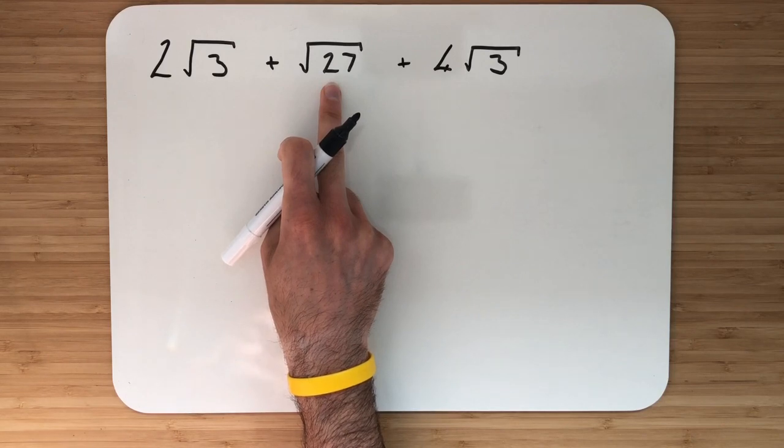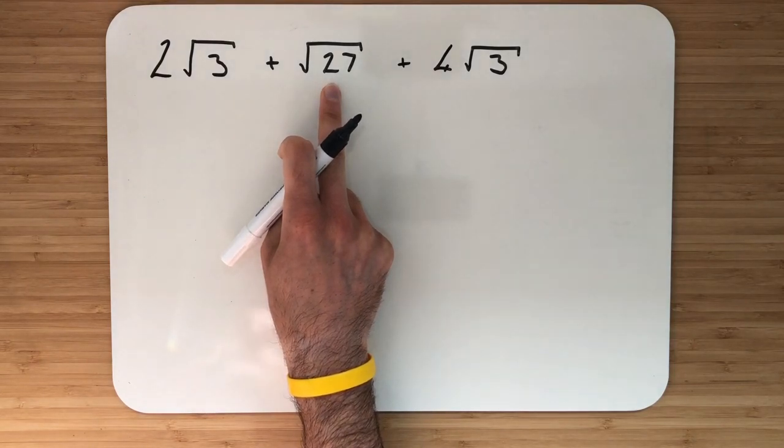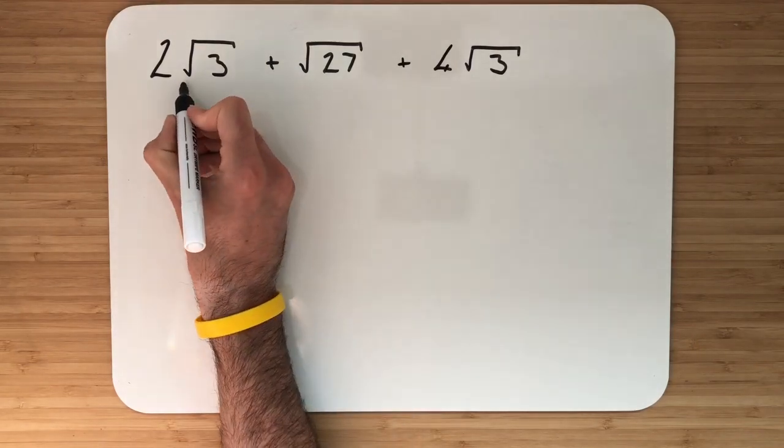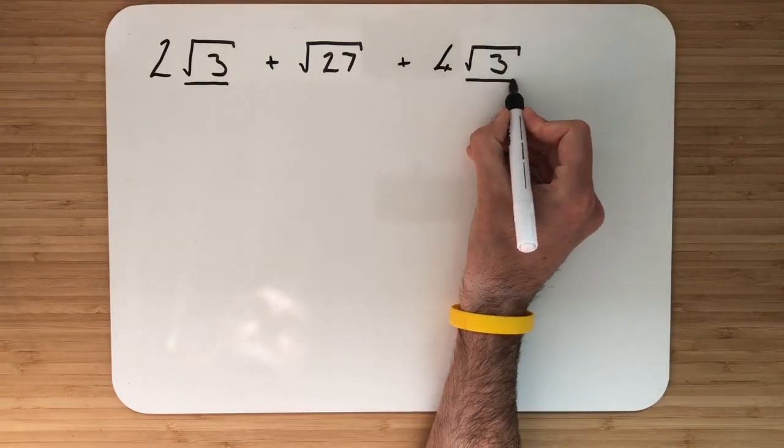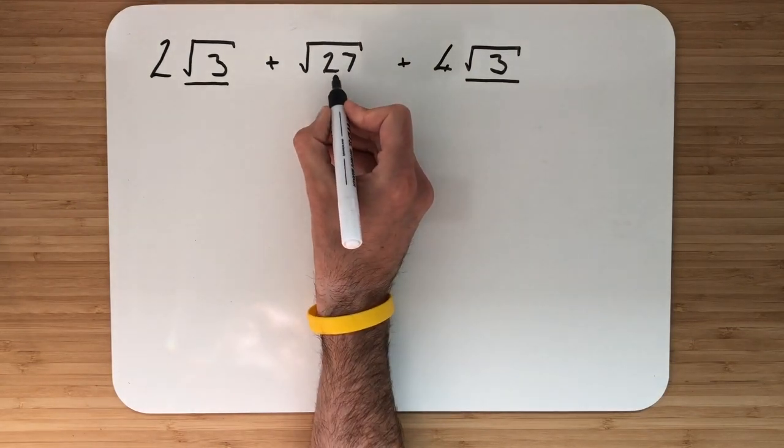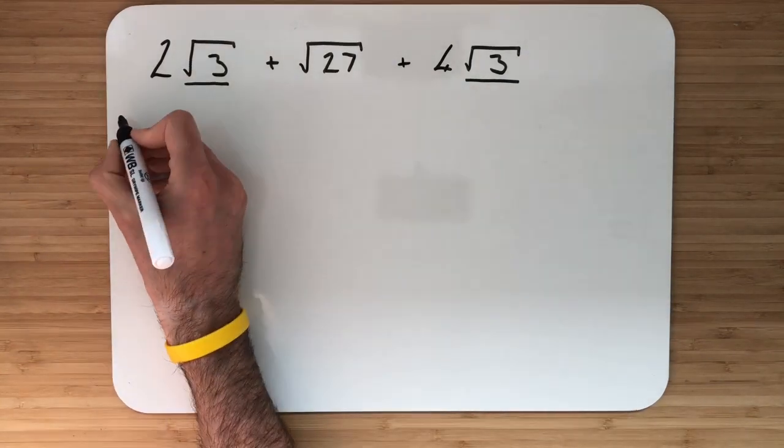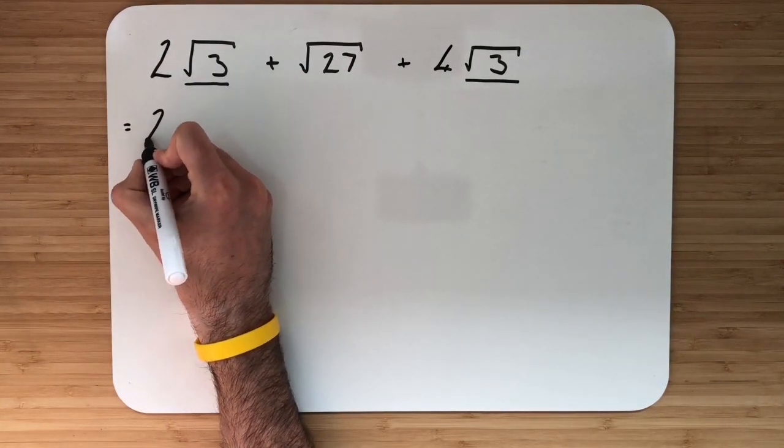I am going to have to simplify the √27 down first of all before I can add these all together. Now the clue is this here, the √3. That means that when we simplify the √27 down, we're aiming to do it as something multiplied by √3. So we have 2√3, add, and we're looking to simplify √27 down.